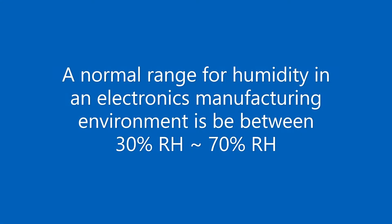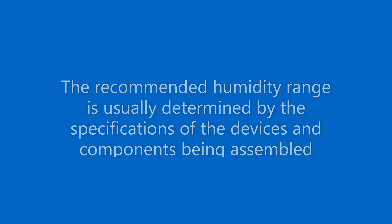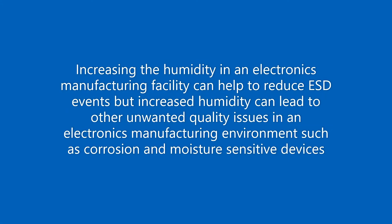A normal range for humidity in an electronics manufacturing environment is between 30% RH and 70% RH. The recommended humidity range is usually determined by the specifications of the devices and components being assembled. Increasing humidity can help reduce ESD events, but increased humidity can lead to other unwanted quality issues such as corrosion and moisture-sensitive devices.